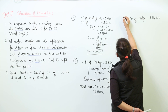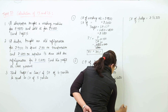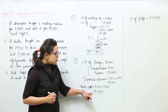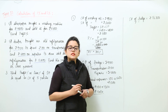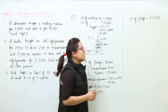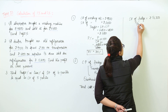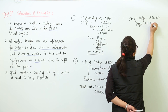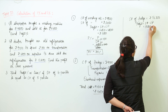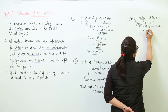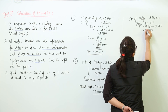Since the cost price is 11000 and the selling price is 13200, we are making a profit. The profit equals selling price minus cost price, that is 13200 minus 11000, so the profit is rupees 2200.